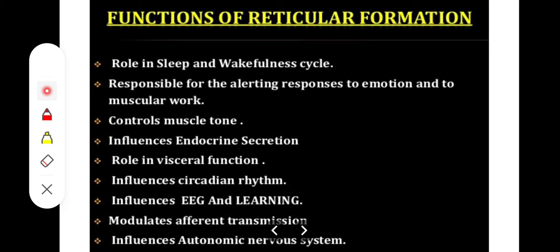That is one role of the reticular formation — arousal from sleep. The second function is alerting responses to emotions and muscular work. The anterior gray column of the spinal cord influences the reticulospinal tract, and alpha-gamma motor neurons control muscle tone. It also has connections with the hypothalamic nuclei, where releasing and inhibiting hormones are produced, so endocrine function is also involved. Visceral function is served by its many afferents from the viscera and body wall, allowing it to regulate responses to those impulses.